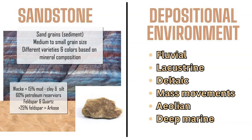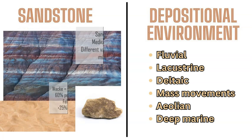Sandstone is a common sedimentary rock formed from sand as the main sediment. It is formed mostly through the movement of water and deposition in water environments, including streams and rivers, lacustrine (lakes and ponds), deltaic (river delta) environments, mass movements, wind (aeolian, like sand dunes), and deep marine environments.